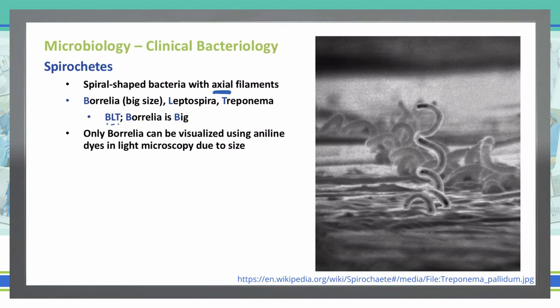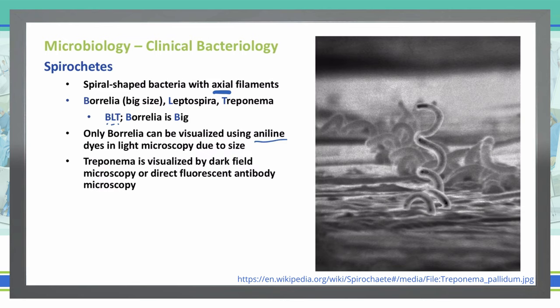What type of aniline dyes can we use? These are going to be either your Wright or your Giemsa stain. To visualize Treponema, we have to use dark field microscopy because they will not stain with those aniline dyes, or we can use direct fluorescent antibody microscopy.